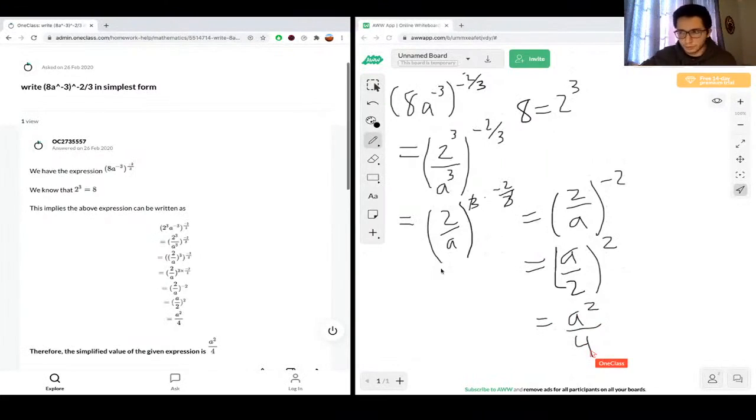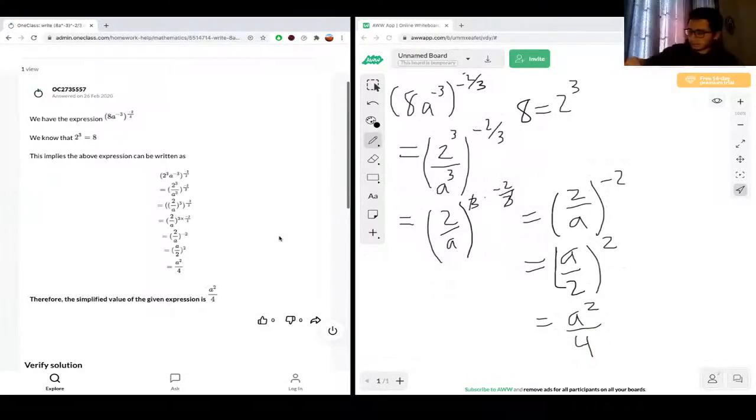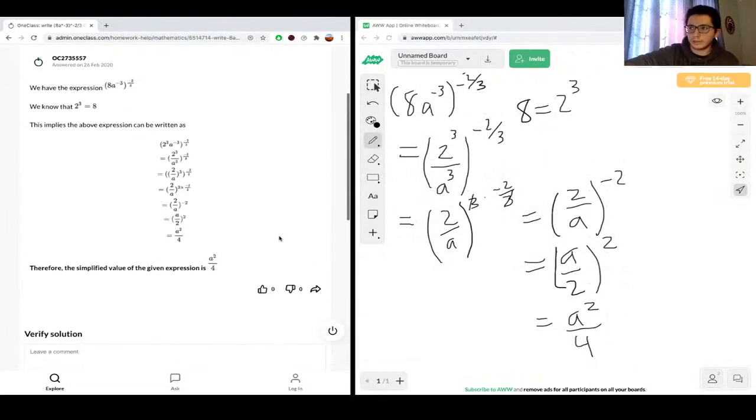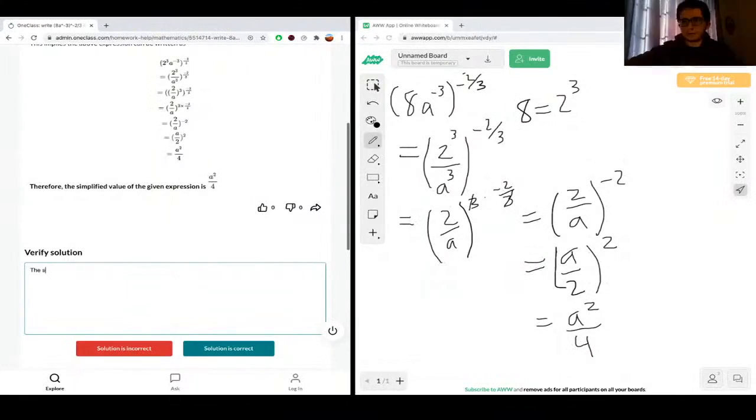And that's our final solution. So looking at the solution here, a similar process is followed, and the final solution is a squared over 4. So the solution is correct, great job.